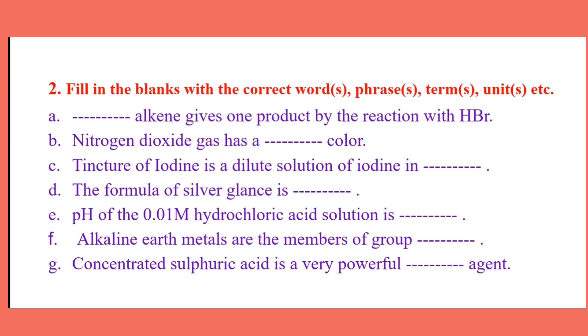Number F: Alkyl and alkaline earth metals are the members of Group 2A. Number G: Concentrated sulfuric acid is a very powerful dehydrating agent.